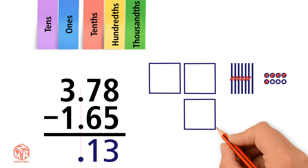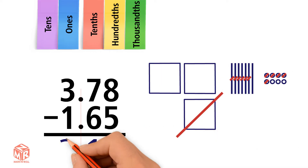Now we subtract the ones. 3 minus 1 equals 2, so we write that in the ones column. So 3.78 minus 1.65 equals 2.13.